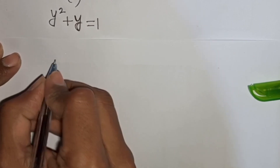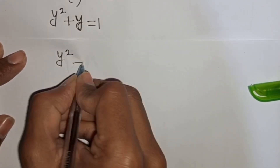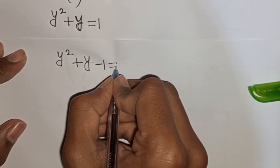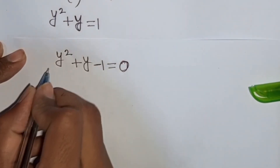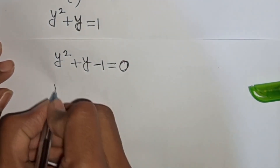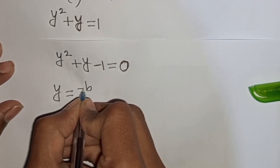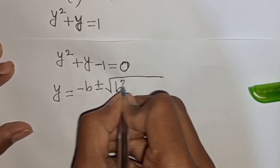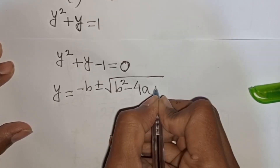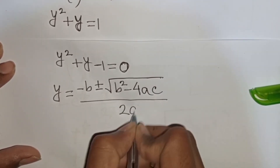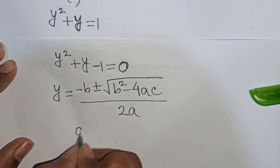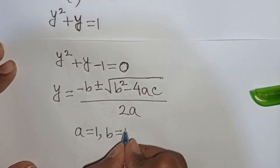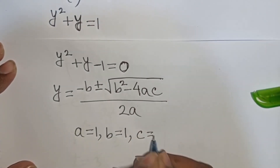We rewrite this as y squared plus y minus 1 is equal to 0. Now here we can apply the quadratic formula. So y is equal to minus b plus or minus square root of b squared minus 4ac, divided by 2a. Here a equals 1, b equals 1, and c equals minus 1.